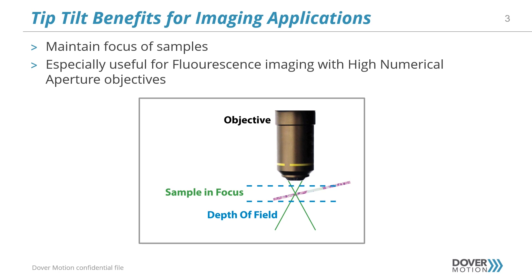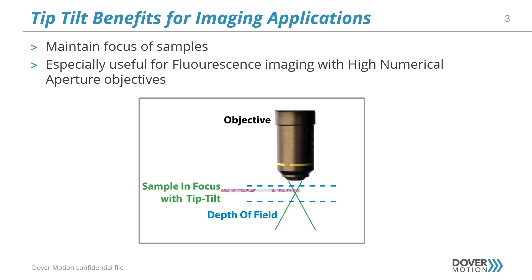As the sample is moved in XY, you can see it moving outside of the imaging depth of field. Adding a tip tilt stage allows compensation for this variation and brings the sample back into focus.